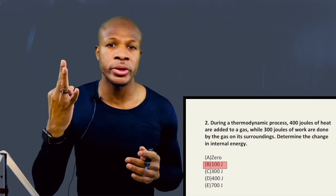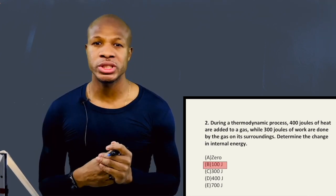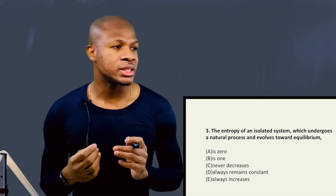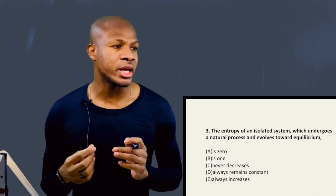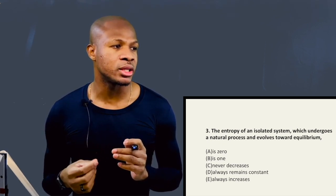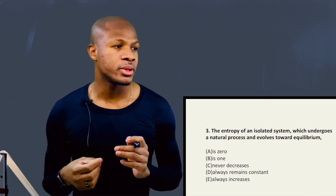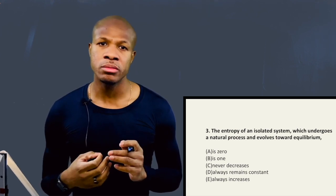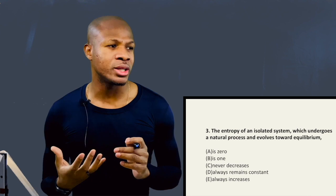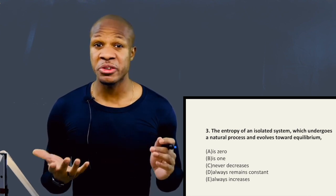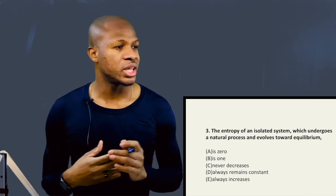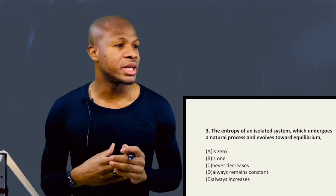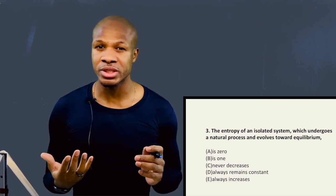Let's take a look at question three. Question three states: The entropy of an isolated system which undergoes a natural process and evolves towards equilibrium — A: is 0, B: is equal to 1, C: it never decreases, D: it always remains constant, E: always increases.